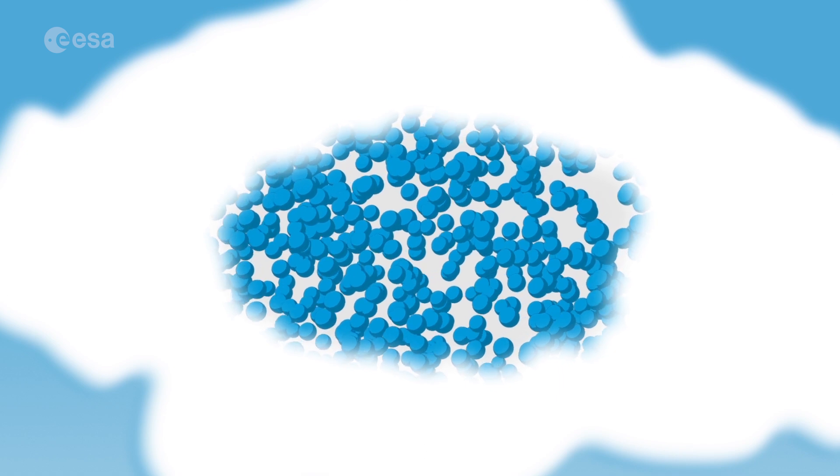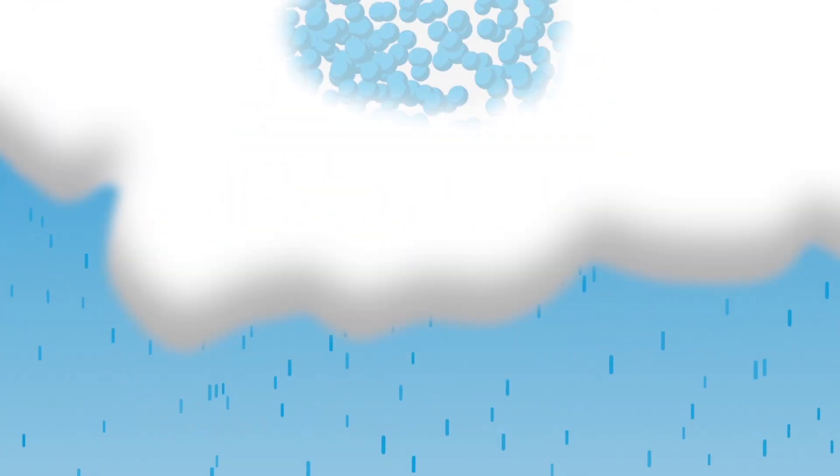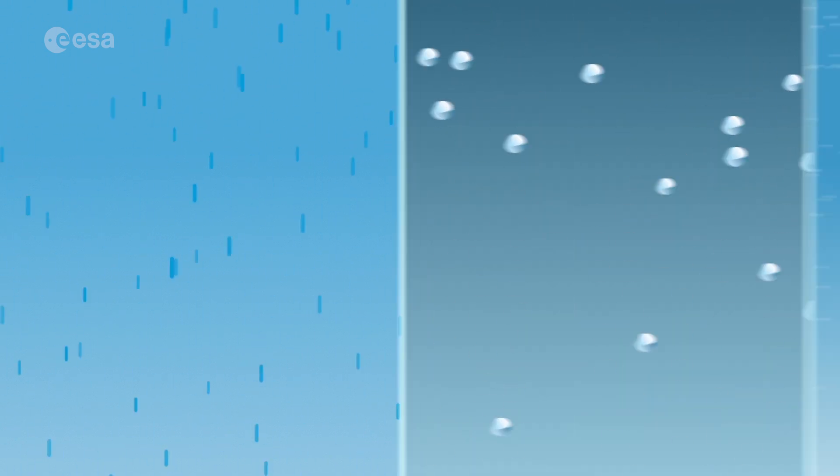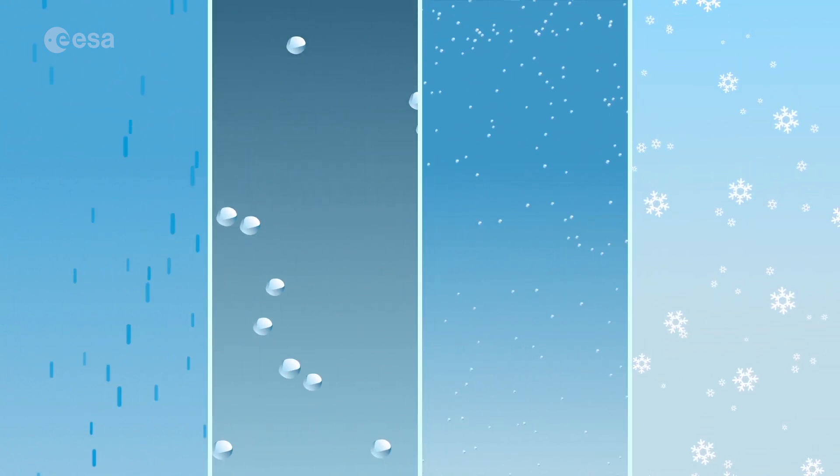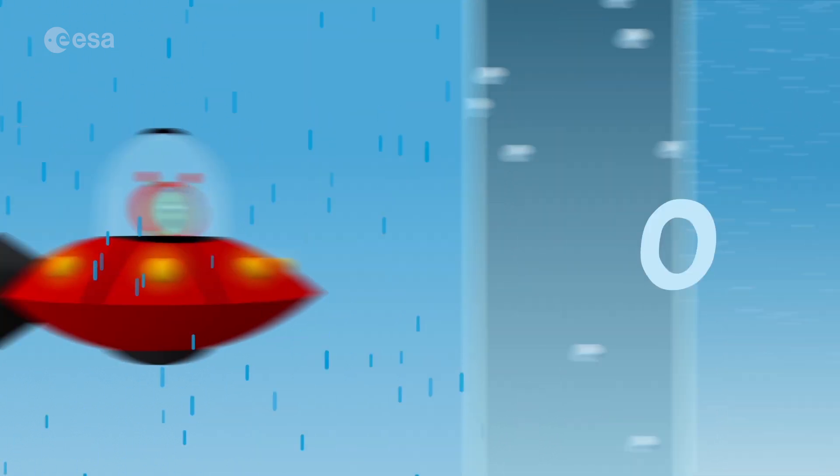When a lot of water has condensed, and the air cannot hold so many water droplets anymore, the water falls back to Earth. It can do this in different ways: rain, hail, sleet or snow. This is what we call precipitation.